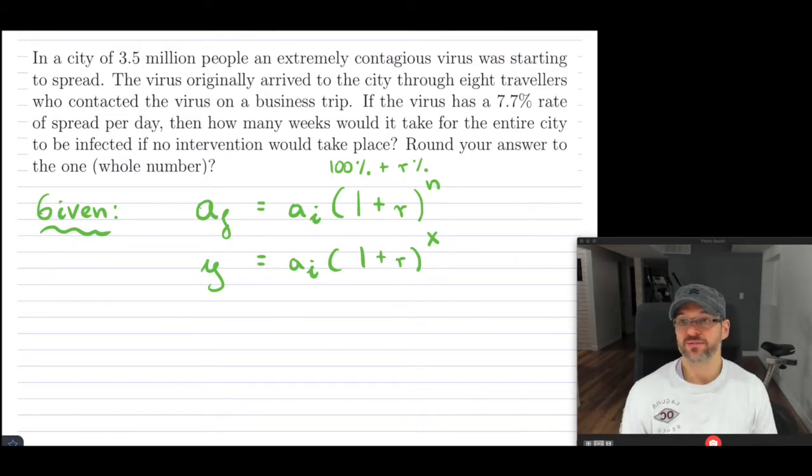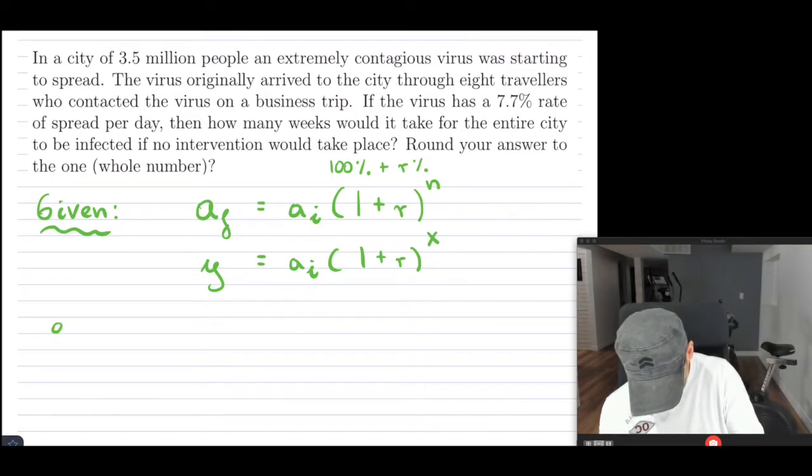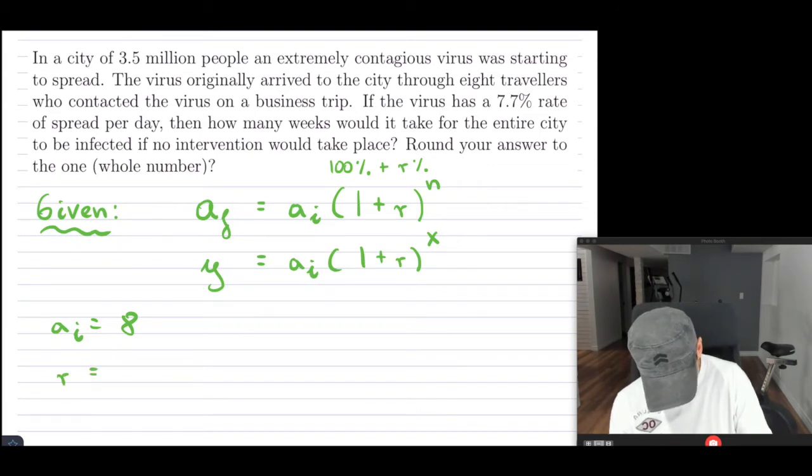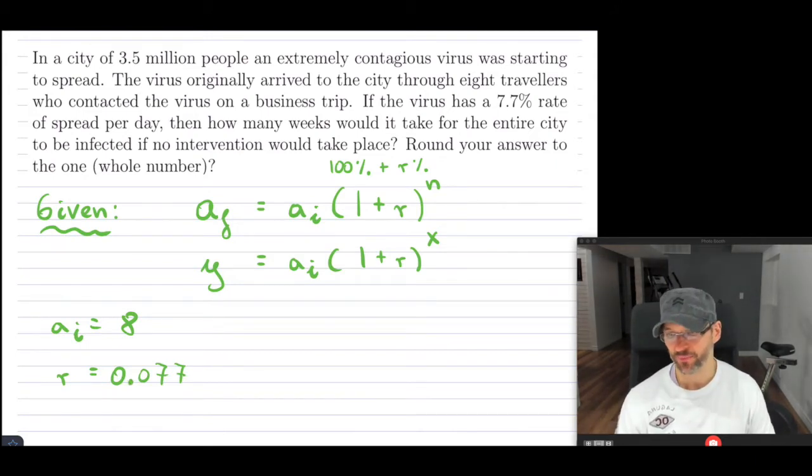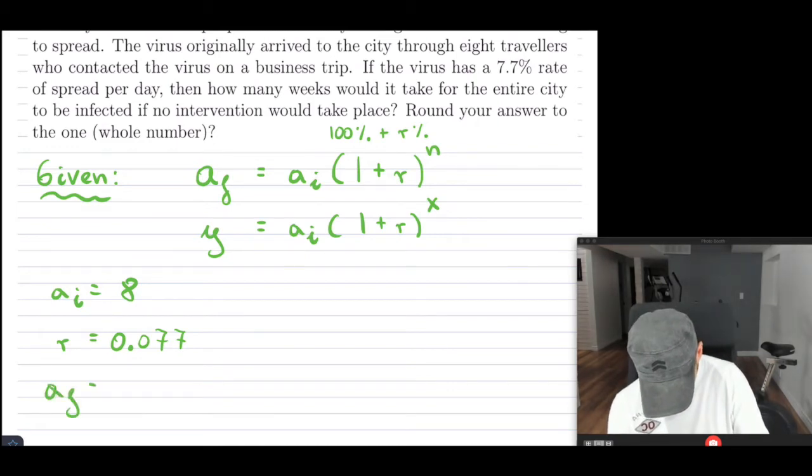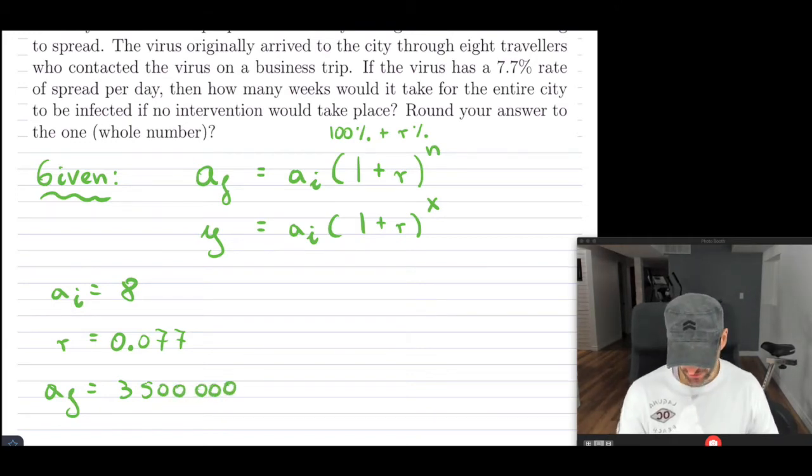So now what do they give us in this question? Well, it says there's a city of three and a half million people. And then there's some business travelers. There's really just eight business travelers. So really, we just started with eight people that had a virus. And then those eight people started to spread it to others. And now it says that they started to spread it at this particular rate. Now, this is per day. So whatever amount we get will be per day. Now, it says how long would it take basically to infect the entire place? Well, so that means if it's going to infect the entire place, then three and a half million people are going to be infected. So that would have been your final amount. So this is what we have right here.